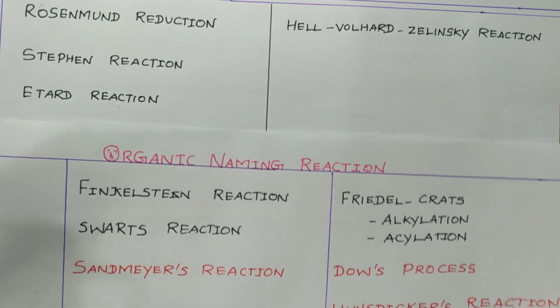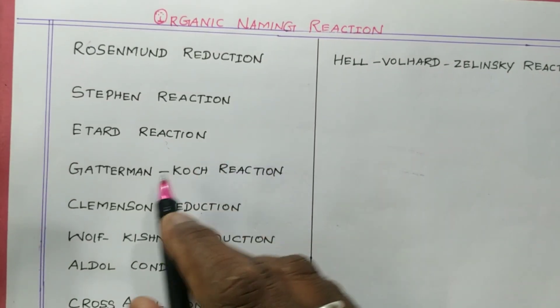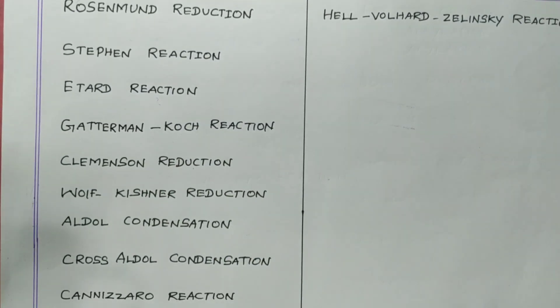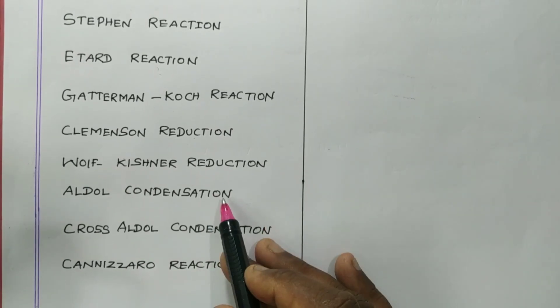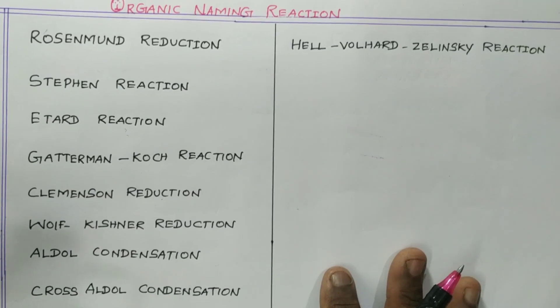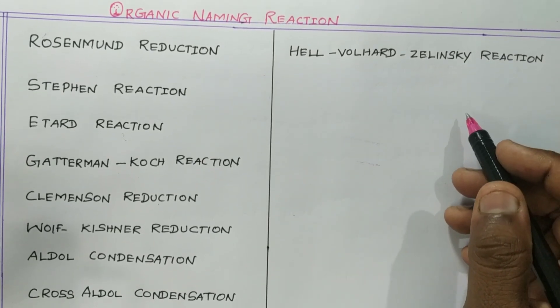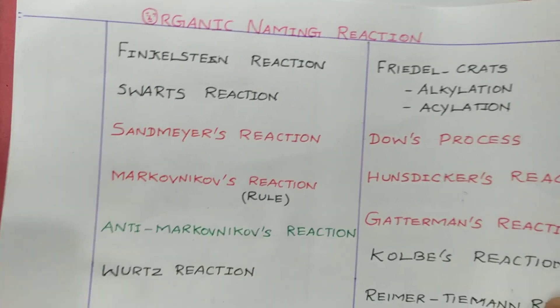Along with that, we'll discuss the Rosenmund reaction, Riemer reaction, Gattermann-Koch reaction, Clemmensen reduction, Wolf-Kishner reaction, Aldol condensation, Cross-Aldol condensation, Cannizzaro reaction, and Haloform-Zelinsky reaction. These are all the things we will discuss in our upcoming videos.